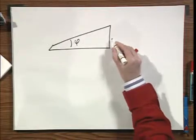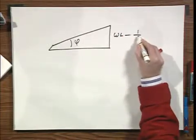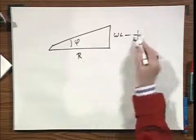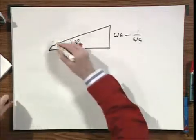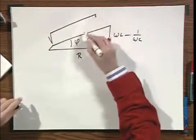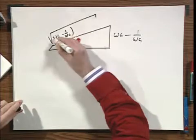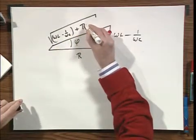And I know that this is omega L minus one over omega C. And I know that this is R because the tangent of phi is exactly what we gave before. That means this here must be the square root of omega L minus omega C squared plus R squared.